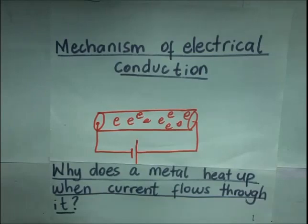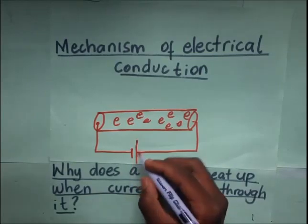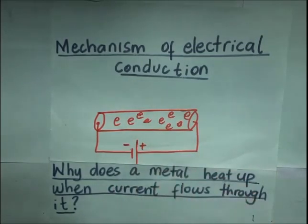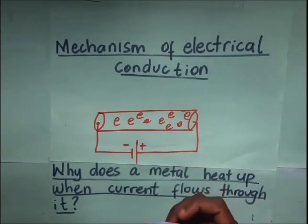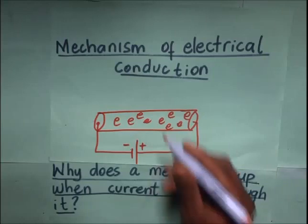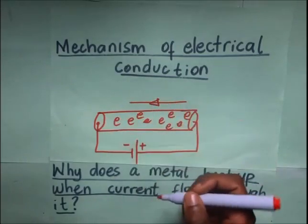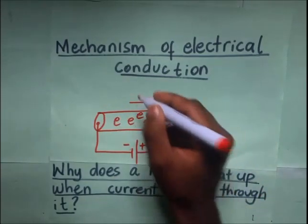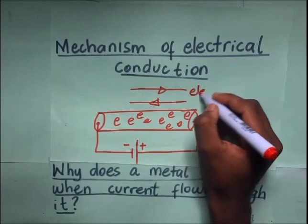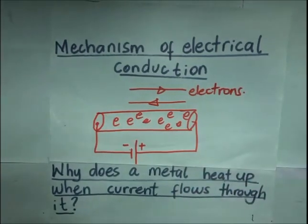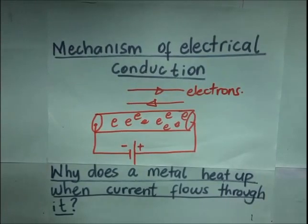When an electric field is set up in the conductor, these electrons are going to drift in the direction opposite to the electric field. As far as this cell is concerned, this is the positive terminal and this is the negative terminal. The electric field moves from positive in that direction, so these electrons will be moving in the opposite direction. When those electrons move in that direction, they constitute what we call electric current.